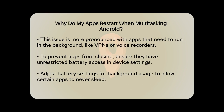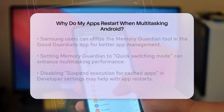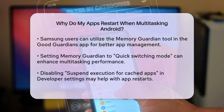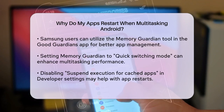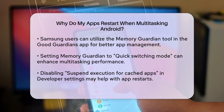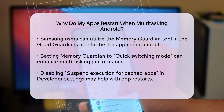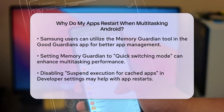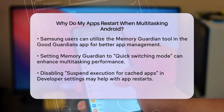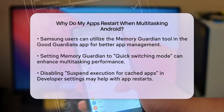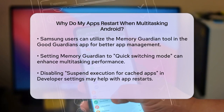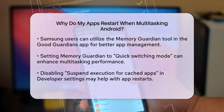Another solution is to adjust the battery settings for background usage. Go to Settings, then to Device Care, tap on Battery, and then Background Usage Limit. Here you can set certain apps to Never Sleep, which can help them stay active in the background.